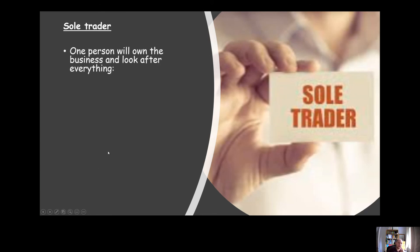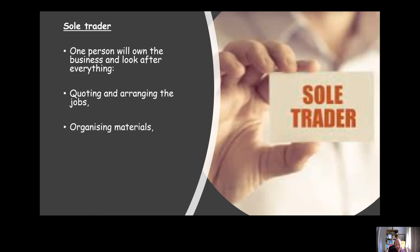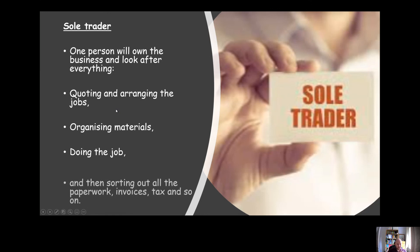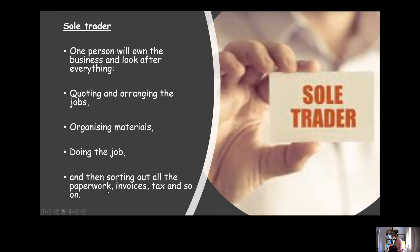First, we're going to look at sole traders. One person owns the business and looks after everything — they quote for jobs, arrange jobs, organise materials, and do the job. They don't have any special people employed exclusively for these tasks. The sole trader generally does almost everything themselves, and then sorts out the paperwork, invoices, and tax once the job is done and they've been paid.